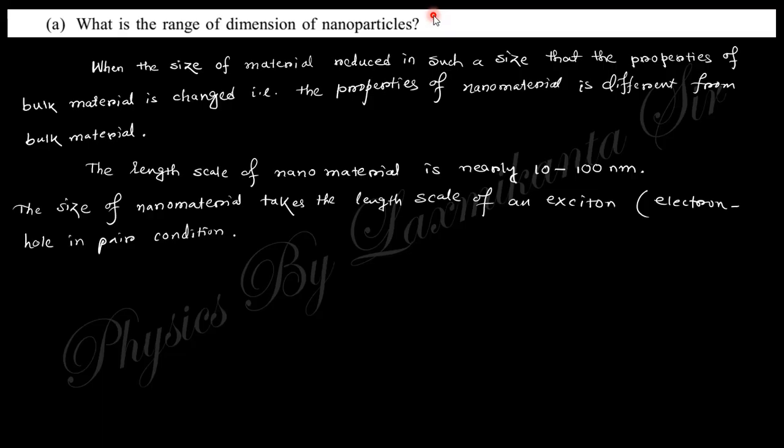You can see nanomaterial of size 300 nanometers also, but the main thing is that its property will be changed from its bulk material. So generally this dimension is 10 to 100 nanometers, but it's not restricted within that region. The main thing is the property of the nanomaterial must be different from the property of the bulk material.